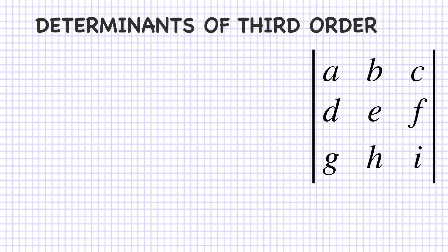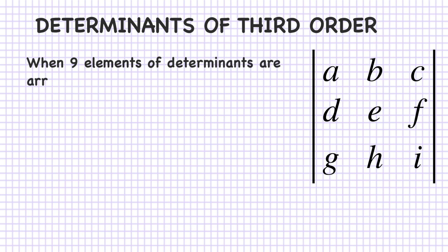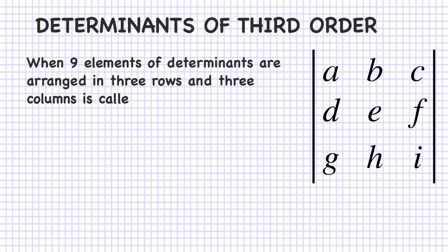So the value of that determinant is minus 38. Similarly, when nine elements of a determinant are arranged in three rows and three columns, it is called a determinant of third order.